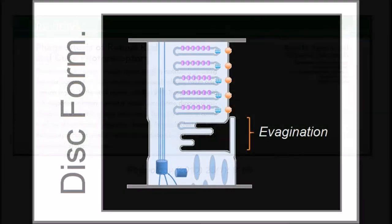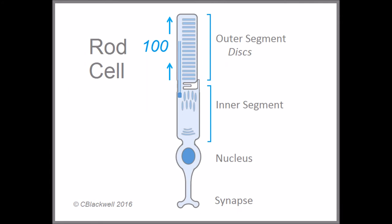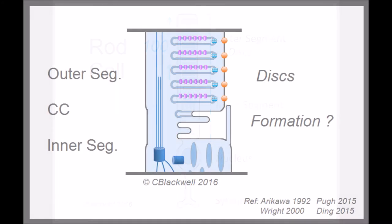While the discs are being shed and digested at one end of the photoreceptor, they are created in an equal amount at the base of the disc stack. For many years, it was not clear how discs were formed. One model suggested that at the base of the outer segment, a piece of cell membrane began a protrusion that turned into a disc. The outward extension is called an evagination. In a short distance, it separated itself from the plasma membrane, forming an internal disc.